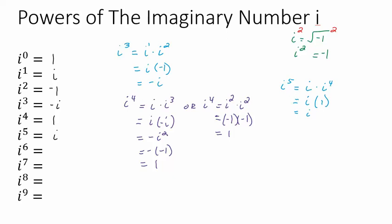i to the sixth would be i times i to the fifth. We just figured out that i to the fifth is i, so we have i times i, which is i squared, which of course is negative 1.